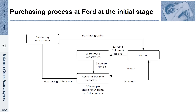The purchasing department would issue a purchasing order and send it to a vendor. A paper copy of that purchasing order was also provided to the accounts payable department. The vendor would then send the goods to the company, and the warehouse department would take in those goods and forward the shipping notice to the accounts payable department. In parallel, the vendor would send an invoice directed to the accounts payable department. Their job was to check the invoice against the shipping notice and against the original purchasing order, and if everything was in line, a payment was made to the vendor.